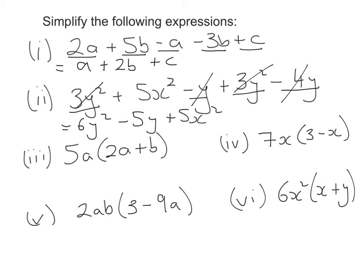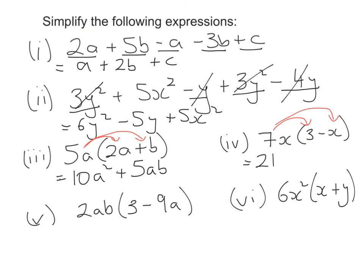For the next one, I multiply 5a by everything inside the bracket: 5 times 2 gives me 10, a times a gives me a squared, plus 5a times b gives me ab. For the question after that, multiplying everything in the bracket gives me 21x minus 7x squared, because there are two x's there.